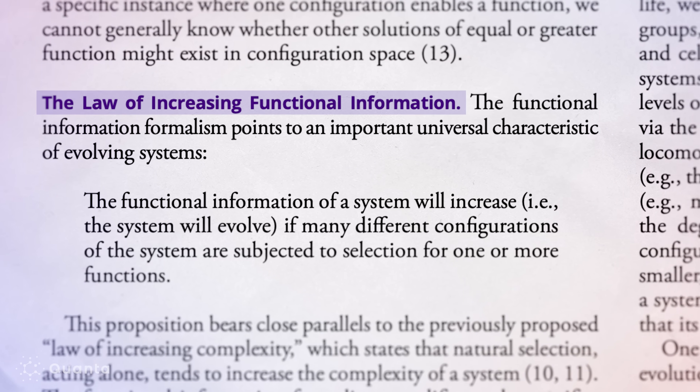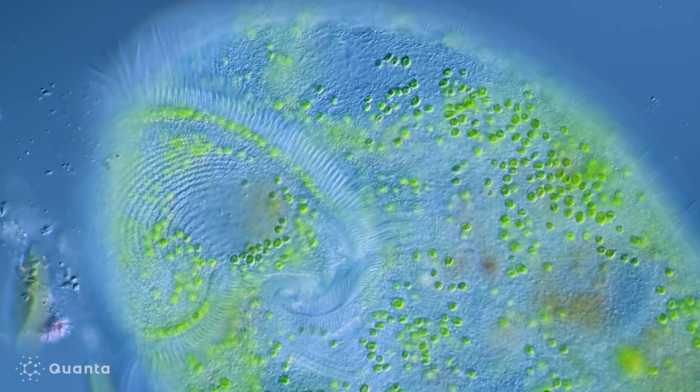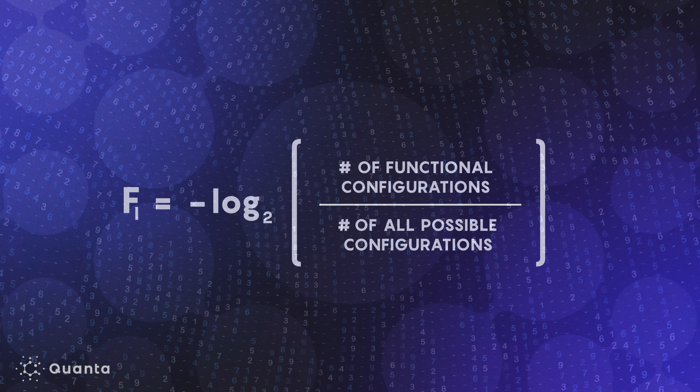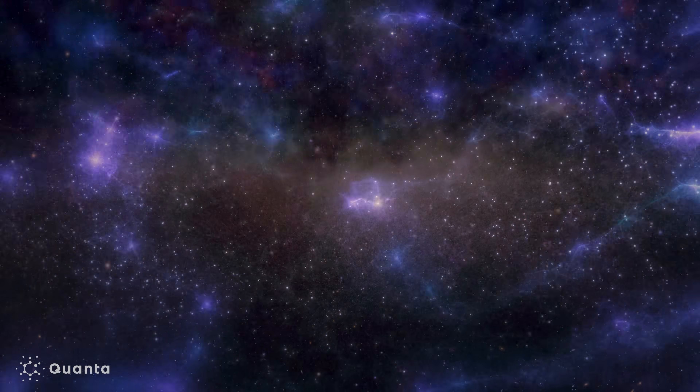The law of increasing functional information is an effort to describe a kind of universal characteristic of the cosmos — the idea that systems over time appear to get more and more complex, more patterned, more diverse, more interesting. We characterize this increase in order through a metric called functional information. We think information is as fundamental a variable in the cosmos as mass or energy or charge.